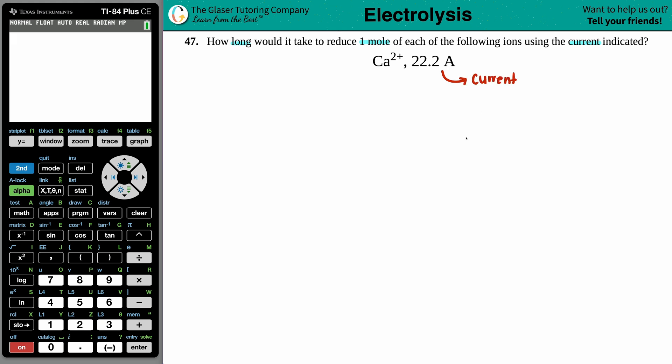And to make things even more confusing, current in your formulas in chemistry is always a capital I value. Okay, so I know that I have an I value. That's the 22.2 amps. That's the current. They're asking for how long would something take, right? If you ask somebody how long is that going to take, you're looking for a time value. So I know that I have to search for lowercase t, that's the time unit.